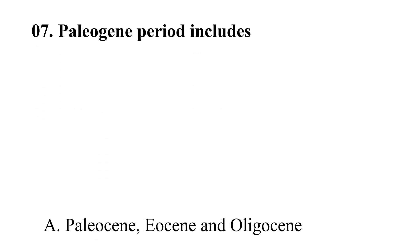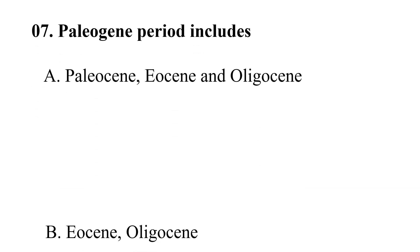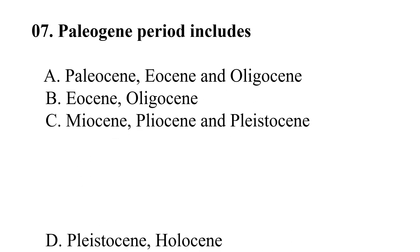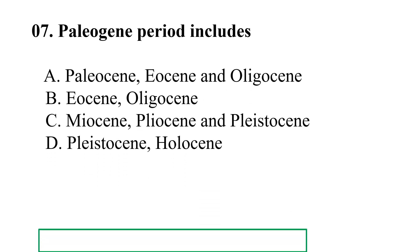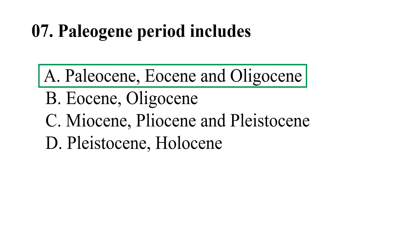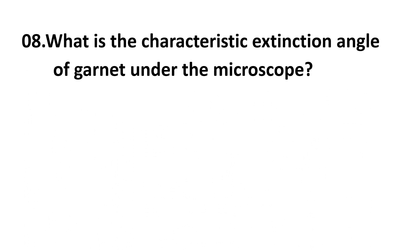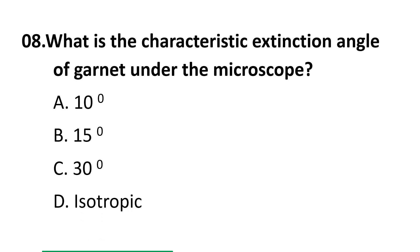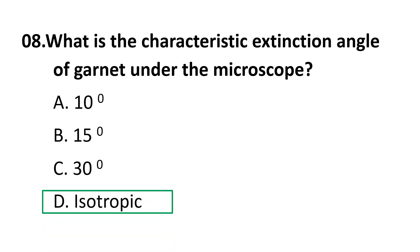Seventh question: The Paleogene period includes? Choices: A) Paleocene, Eocene, Oligocene, B) Eocene, Oligocene, C) Miocene, Pliocene, Pleistocene, D) Pleistocene, Holocene. The correct answer is A: Paleocene, Eocene, and Oligocene. Eighth question: What is the characteristic extinction angle of garnet under the microscope? Choices: A) 10°, B) 15°, C) 13°, D) Isotropic. Garnet is an isotropic mineral, so the answer is D.